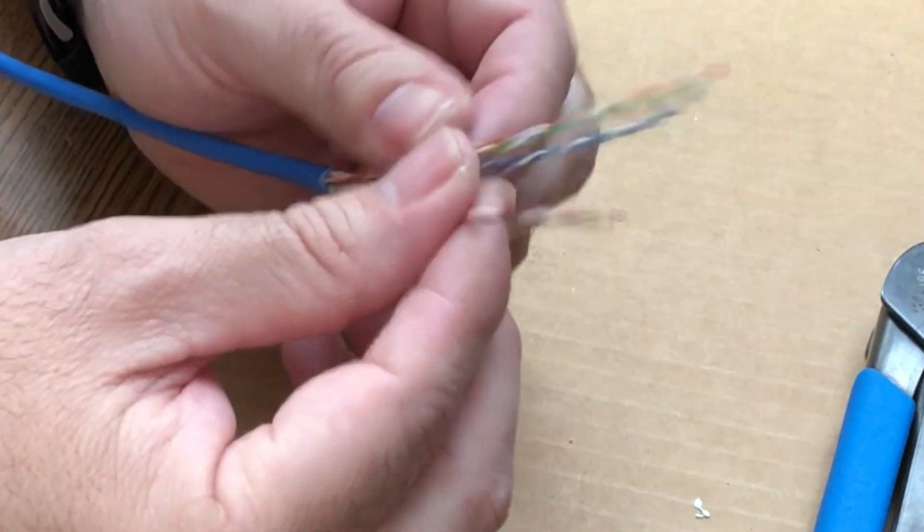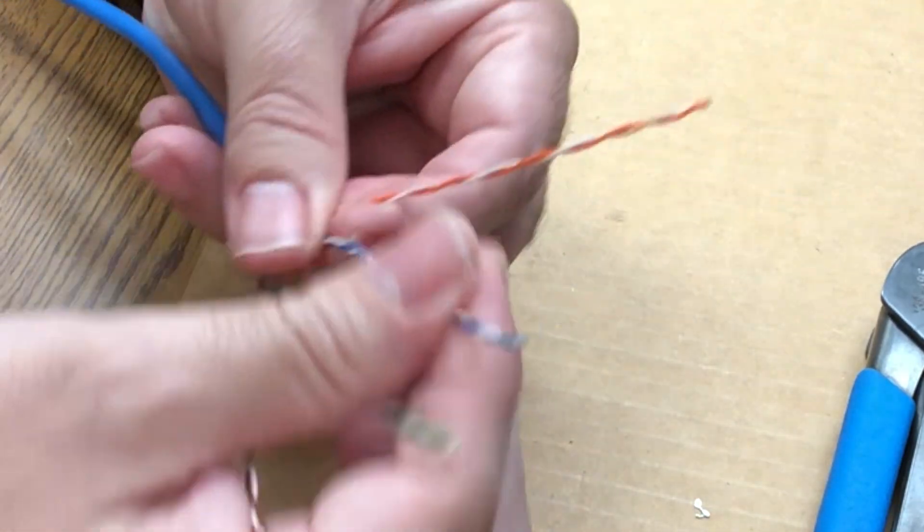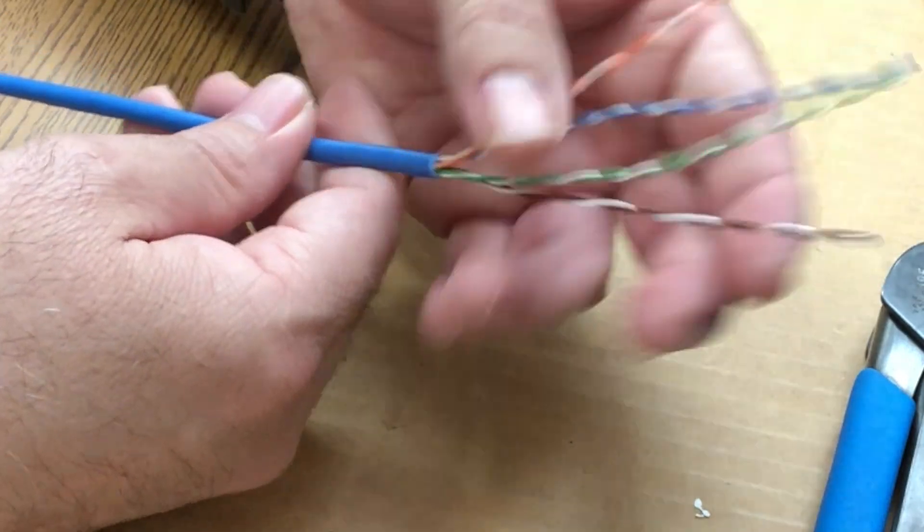When we see the cable stripped we have what they call four pairs. We got an orange pair, a blue pair, a green pair, and a brown pair.